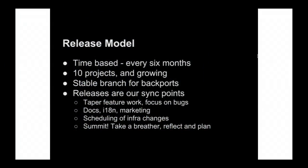OpenStack has a time-based release model, with many projects and a growing number of them and a growing number of people. We do keep a stable branch, which was actually not always the case in OpenStack. The original conversation was at the Essex summit. The distro folks came in and said, 'We're releasing something to our users, they're finding bugs and reporting them back, and we would like to put those bug fixes somewhere.' That was the first time we ever decided to actually maintain a stable release branch. And it's been a disaster ever since.